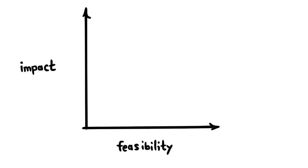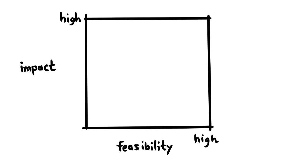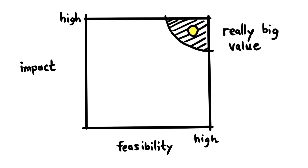I start with impact and feasibility. Put it on a two by two. And then you're able to map your ideas, concepts, and businesses to it. Highly feasible, not so impactful in the case drawn there. Highly impactful, not so feasible. And of course, what we want is to be in that top right corner where we're both highly impactful and highly feasible. That is really big value.